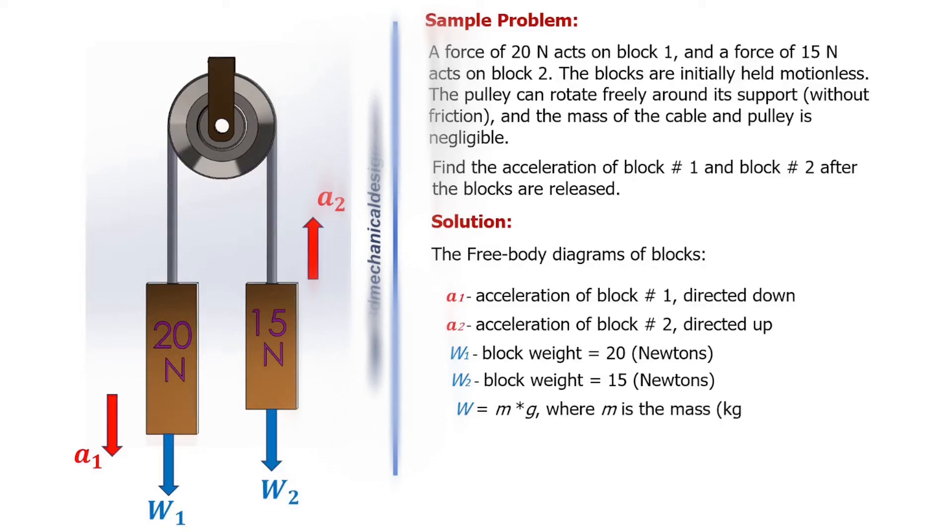Where m is the mass in kilograms, and g is the acceleration of gravity, equal to 9.81 meters per second squared.